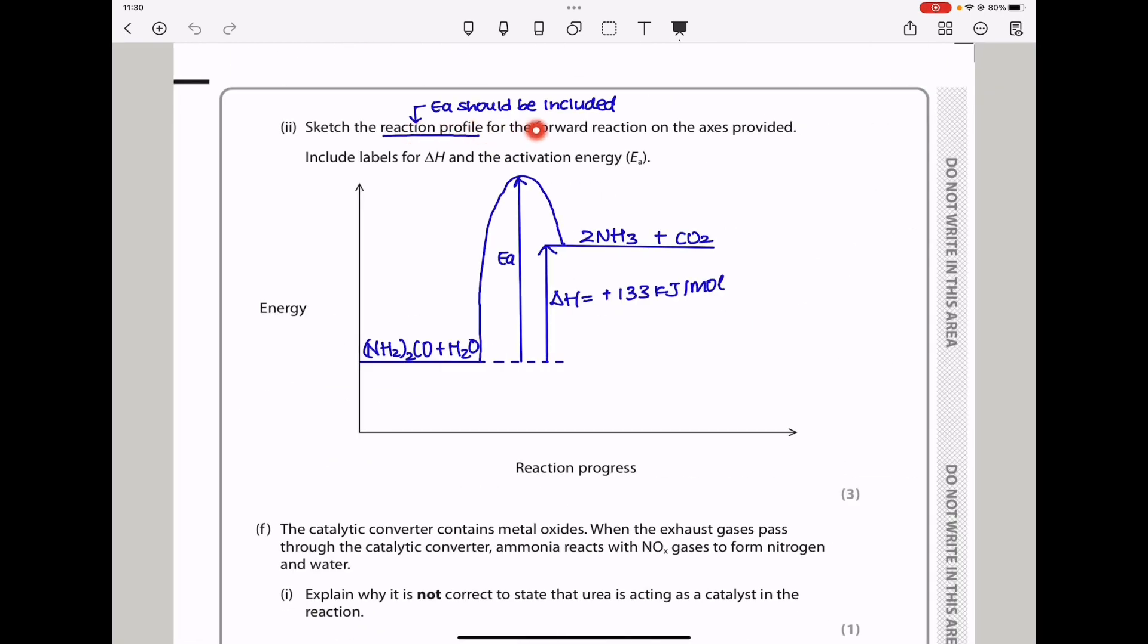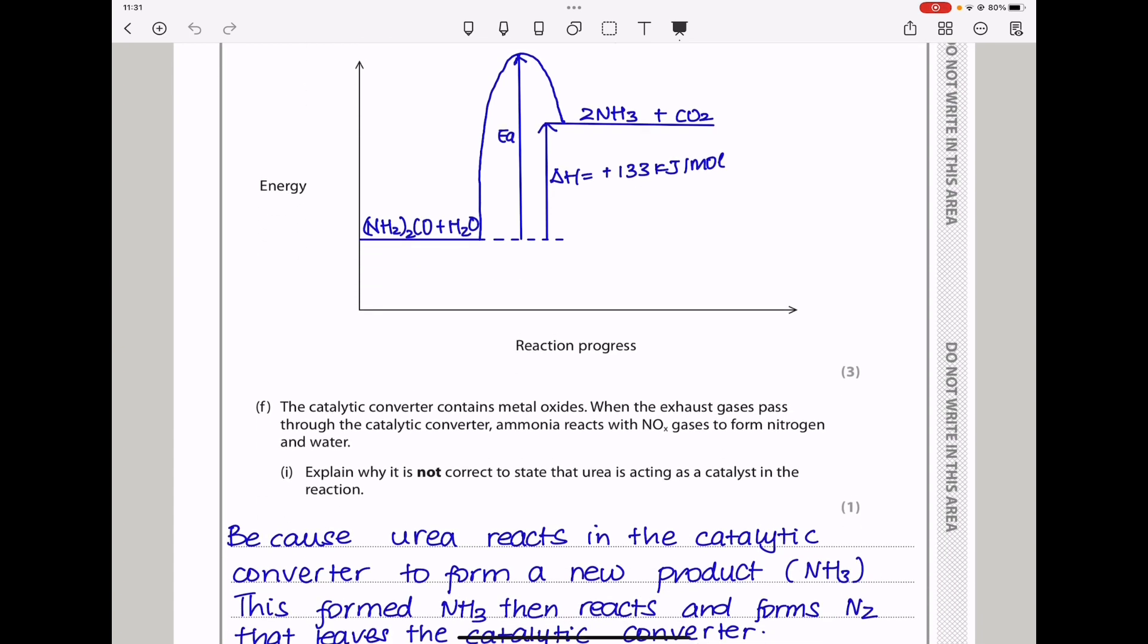Moving on. They say sketch the reaction profile for the forward reaction on the axis provided and include labels for delta H and activation energy. So I wrote the reactants and then the products here. We know delta H is from the level of the reactants to the level of the products. So I put delta H which is equal to positive 133 kilojoules per mole. By the way, you can just write reactants here instead of the actual reactants and products here. And then here you could just put delta H. Now activation energy is from the reactant level to the highest peak on the curve.